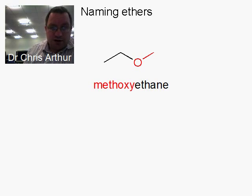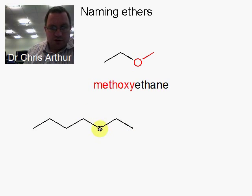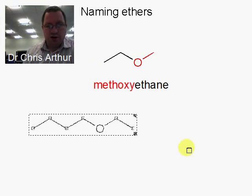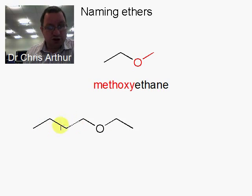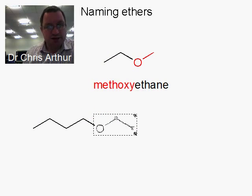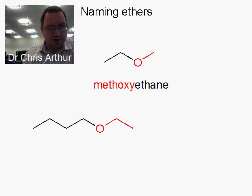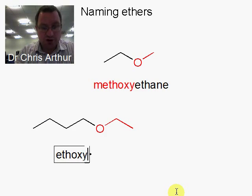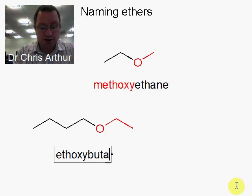Let's look at a slightly longer example. Here we have this chain. We have one, two, three, four carbons on this side, and we have two carbons here. So this is the part we're going to treat as being attached to the front end. This has two carbons on it, so this is ethoxy. And the main chain is one, two, three, four — ethoxybutane.